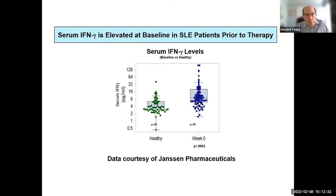I'm showing data courtesy of Janssen Pharmaceuticals that measured gamma interferon in a subset of — I believe — 99 lupus patients. The levels of gamma are on the order of four to about 16 picograms per mil, which are just about exactly what we see in our mouse model. So we believe the mouse model is very relevant to human disease because the circulating gamma levels match what's been found in patients.